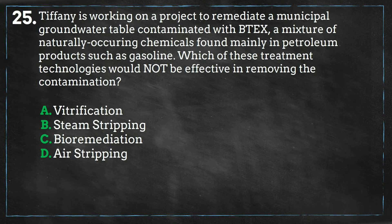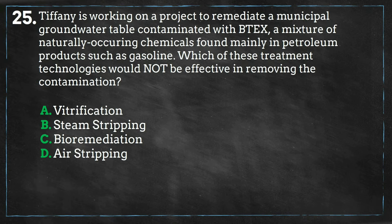Vitrification is the process of melting and forming slag and ash waste into glass-like pellets. Heavy metals and toxic compounds cannot leach out, and the pellets can then be disposed of in hazardous waste landfills. This is not an effective method for the removal of VOCs, so the answer is A.